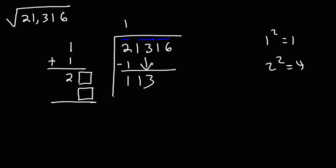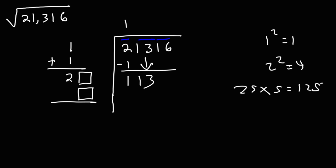It doesn't have to be exactly 113 because we haven't used the 16 yet, but we want a number close to but just under 113. Let's try 5: 25 times 5 is 125, which exceeds 113. So the next best option is 4. 24 times 4: 4 times 4 is 16, carry the 1; 2 times 4 is 8, plus 1, that's 96. So 24 times 4 is 96.